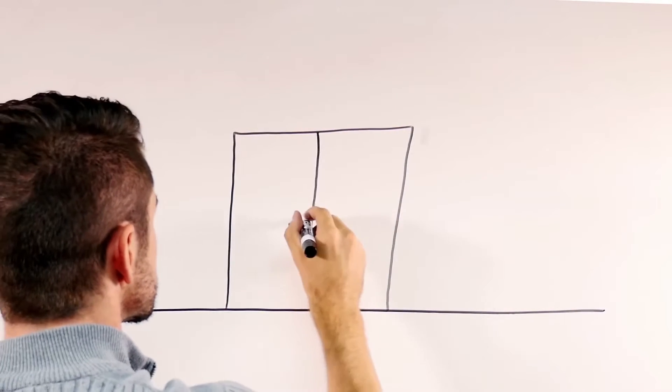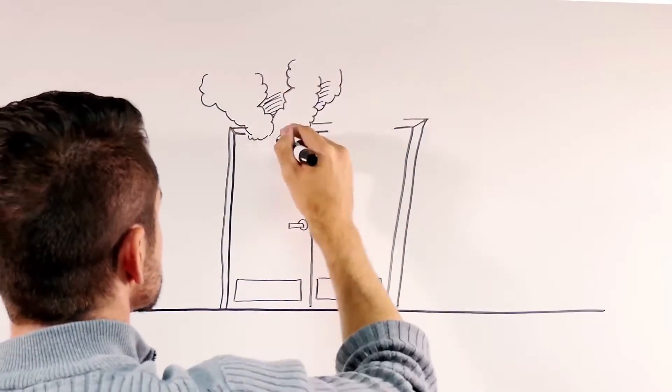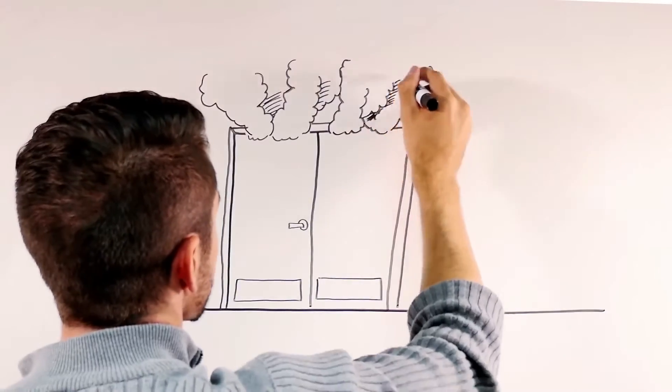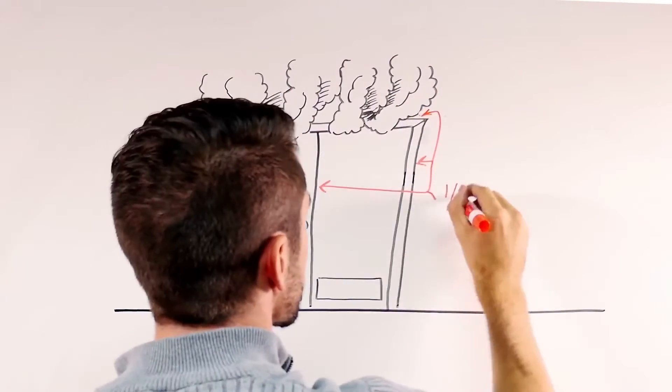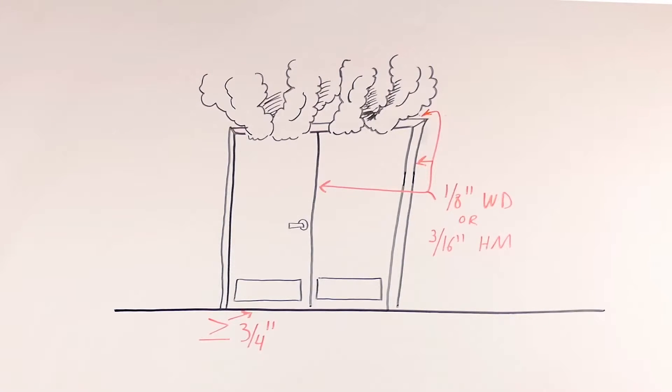Clearances at the head and jams and at the meeting styles of pairs is limited to one-eighth inch maximum for wood doors and three-sixteenth inch maximum for hollow metal doors. The clearance at the bottom of the door must be no more than three-quarters of an inch. Some fire door assemblies are also required to have gasketing at the head and jams to reduce the amount of smoke infiltration during a fire.